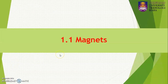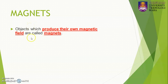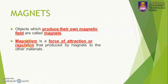Now we go to the first subtopic, which is magnets. What is the definition of magnets? Whenever you have an object that can produce its own magnetic field, we call it a magnet. Magnetism is actually a force of attraction or repulsion that is produced by magnets on other materials.